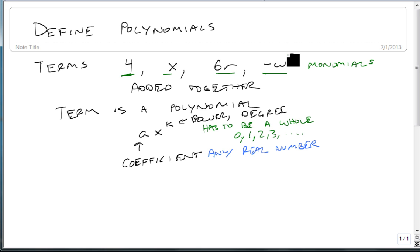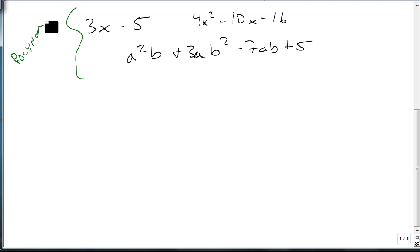Now, some polynomials have more than one term. Something like 3x minus 5, or 4x squared minus 10x minus 16, or even a squared b plus 3ab squared minus 7ab plus 5. These are all polynomials because their terms are all monomials.